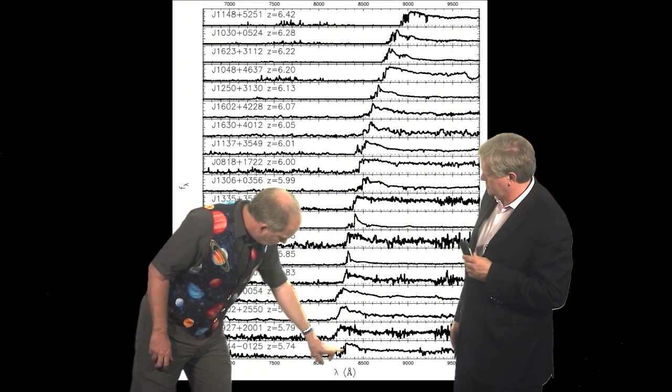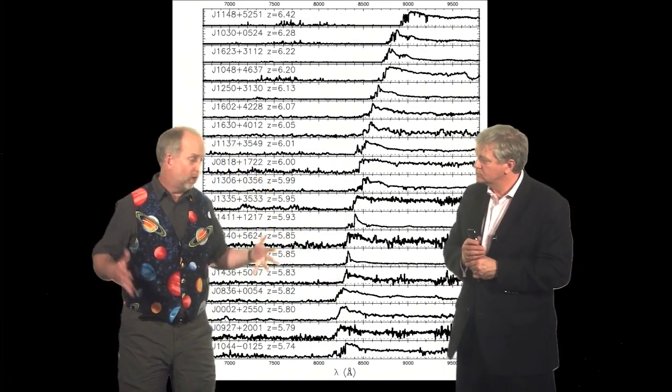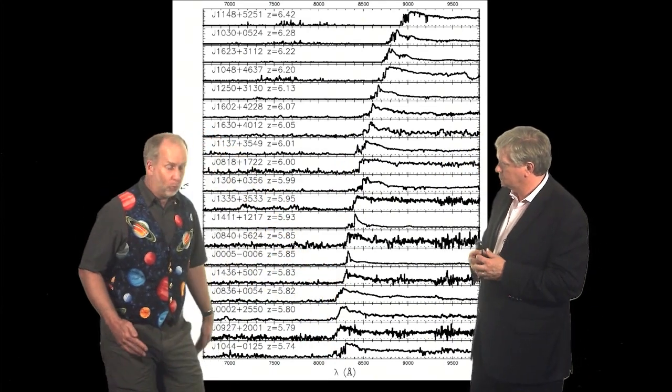Yes. So down here, this is the Lyman alpha emission line. So what we would expect, remember, if the universe is full of neutral hydrogen, is no light shortwards of this.